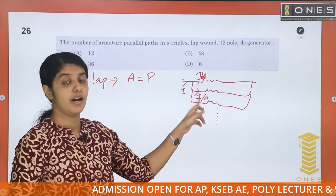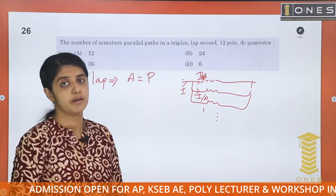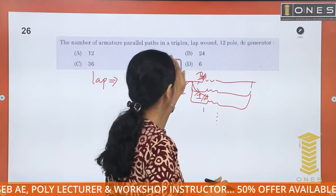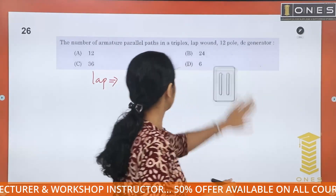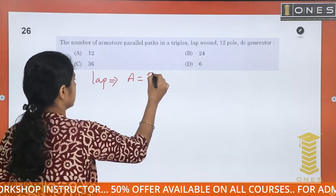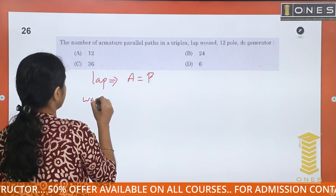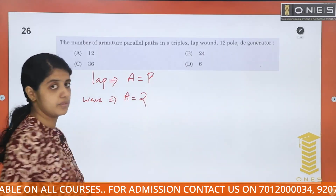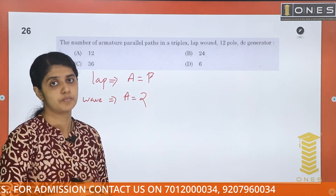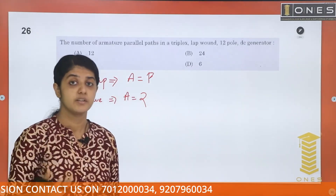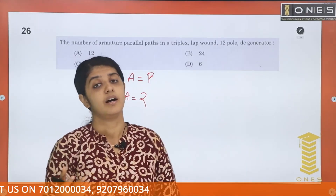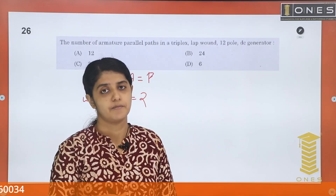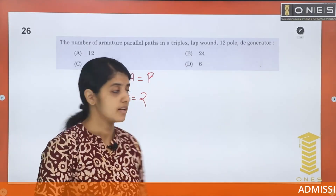Lap winding is used for high current, low voltage applications. Wave winding has two parallel paths, a equals 2, and is used for low current, high voltage applications.